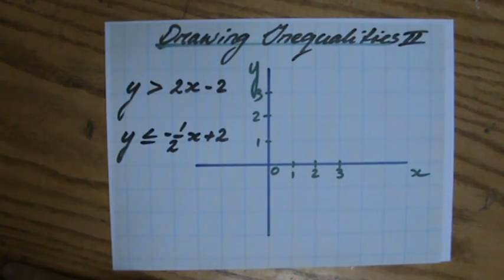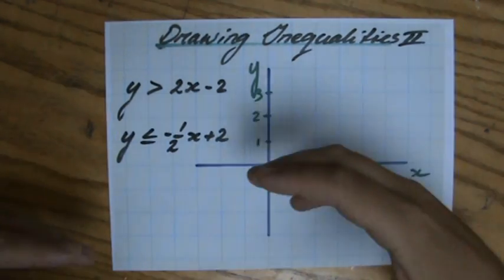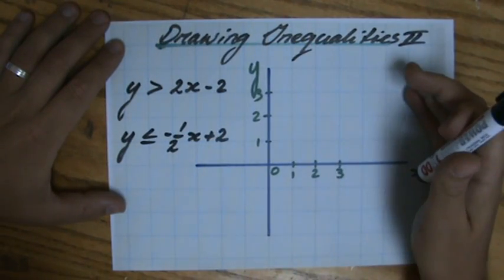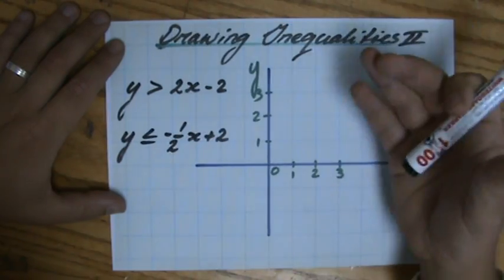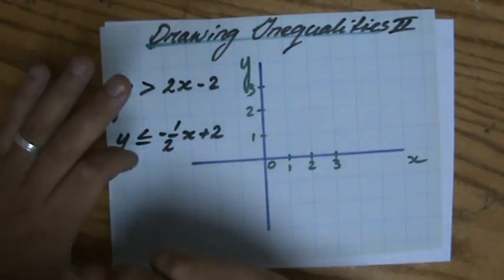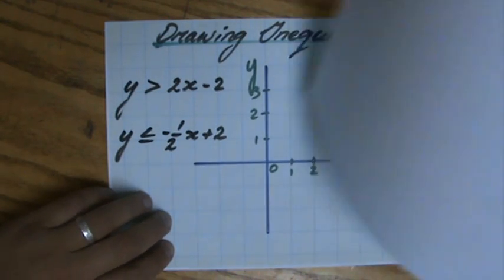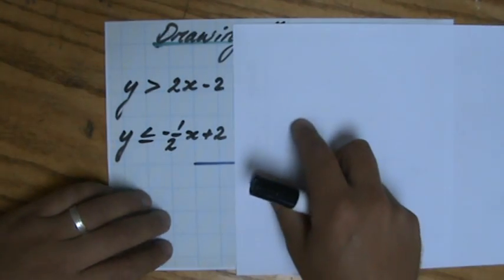This is part two about drawing inequalities. Make sure you've seen the first part where I explained that it's the same as drawing an equality equation, except when you're drawing the line you have to slow down a minute and think. Check my site explainingmaps.com to find all those resources nicely organized for you.